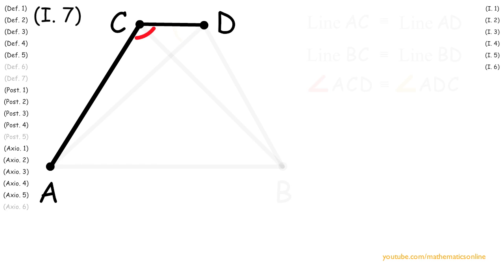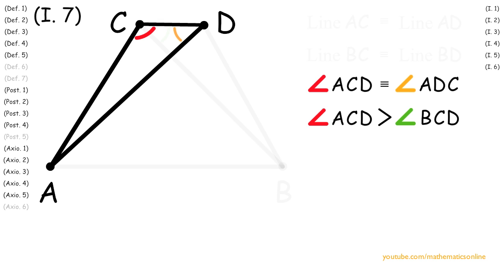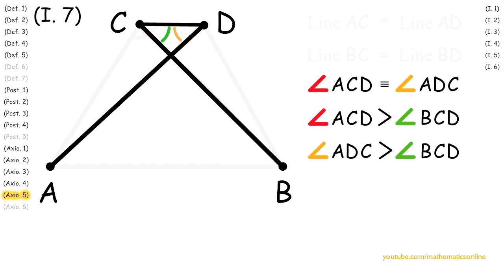Next, looking at angle ACD and angle BCD we can see that by Axiom 5 angle ACD is greater than angle BCD. Since we also have that angle ACD is congruent to angle ADC, then by Axiom 5 angle ADC is also greater than angle BCD.